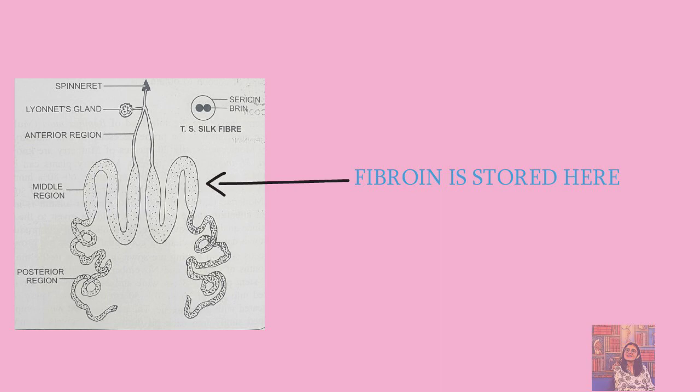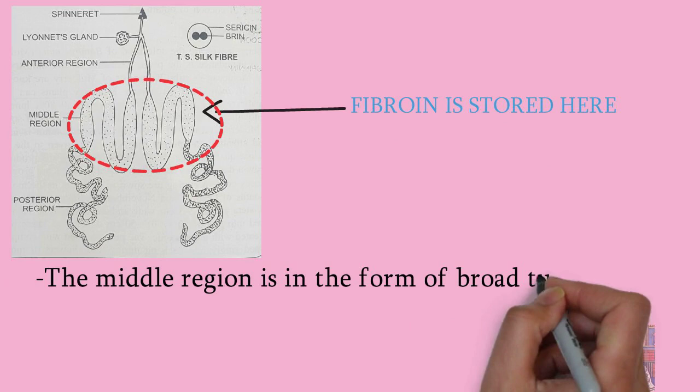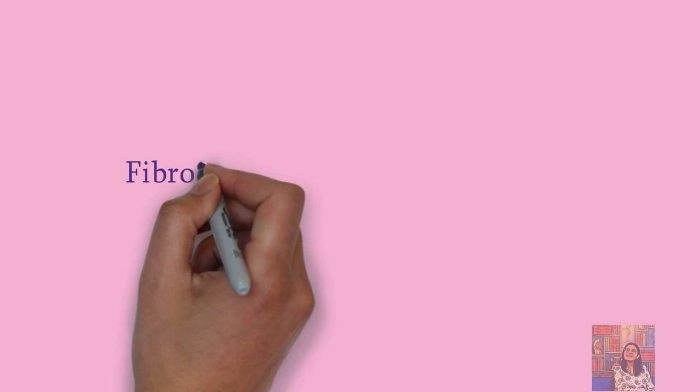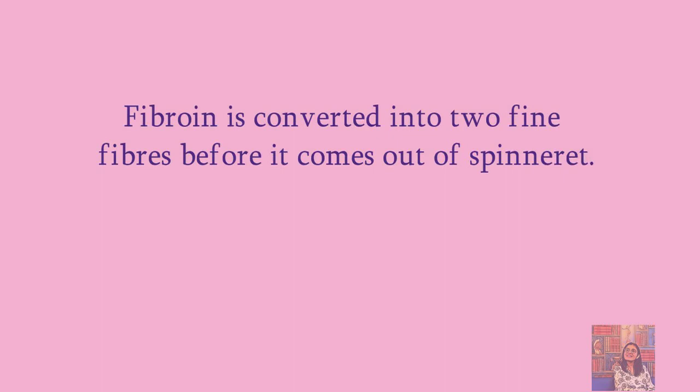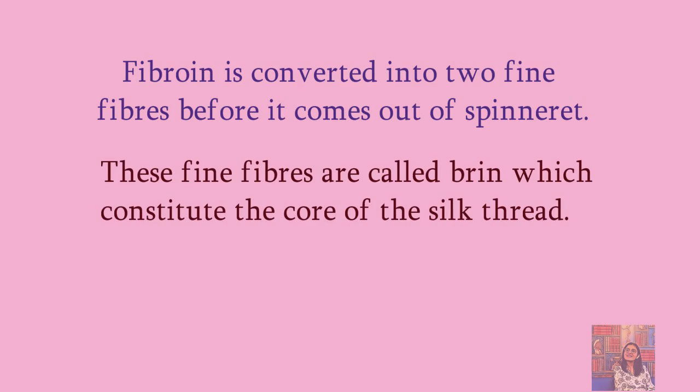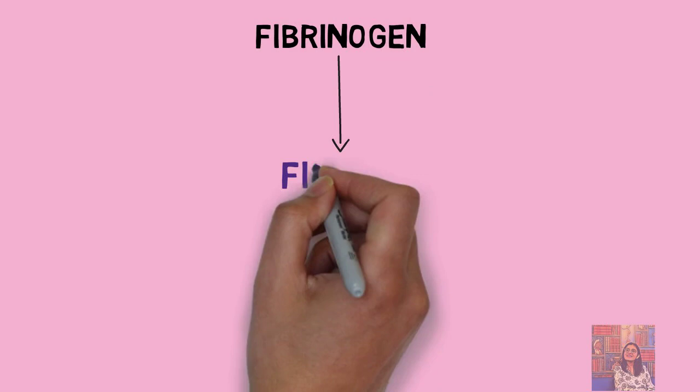As shown in the diagram, the middle region is indicated — the thick part is stored in the middle region. When the caterpillar forms a cocoon, the fibrin is further processed. So there are three stages: first, fibroin is secreted; then it gets converted into fibrin; and the fibrin is stored in the middle region.